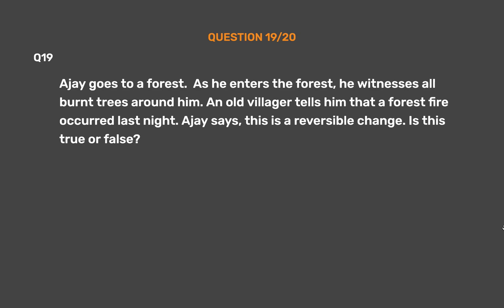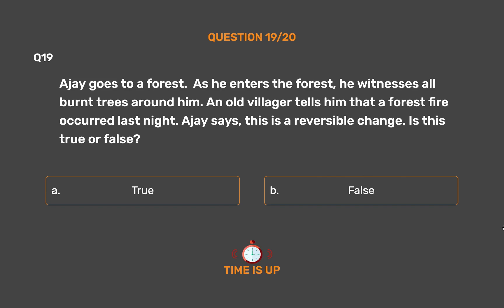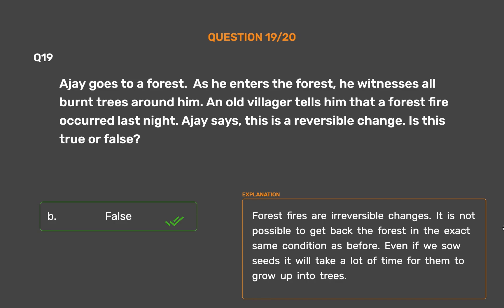Question number 19: Ajay goes to a forest. As he enters, he witnesses all burnt trees around him. An old villager tells him that a forest fire occurred last night. Ajay says this is a reversible change. Is this true or false? Option A: True. Option B: False. The correct answer is Option B, False. Forest fires are irreversible changes. It is not possible to get back the forest in the exact same condition as before. Even if we sow seeds it will take a lot of time for them to grow into trees.